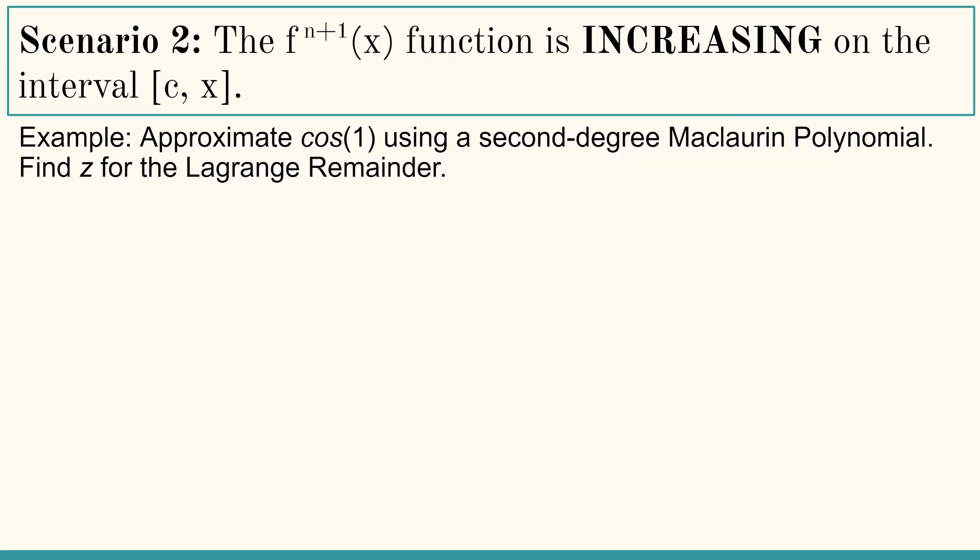Scenario 2, the n plus 1st derivative of the f of x function is increasing on the interval c to x inclusive. Example, approximate cosine of 1 using a second degree Maclaurin polynomial. Find z for the Lagrange remainder. Let's get the basics, n, c, and x. Our second degree polynomial centered at 0. And we're trying to approximate the value x equals 1.